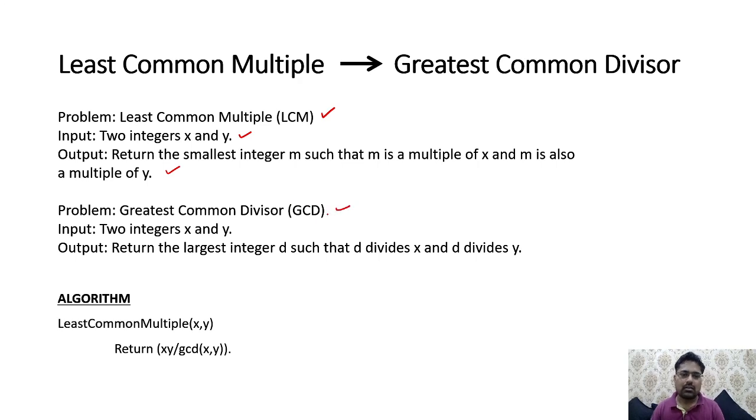For GCD, the input is also x and y. The output is the largest integer d such that d divides both x and y. This is what GCD is, and this is what LCM is.